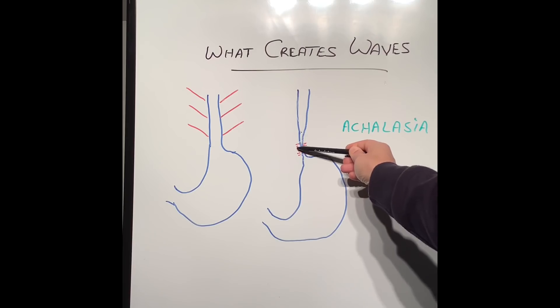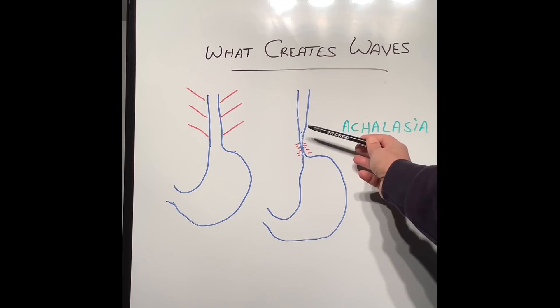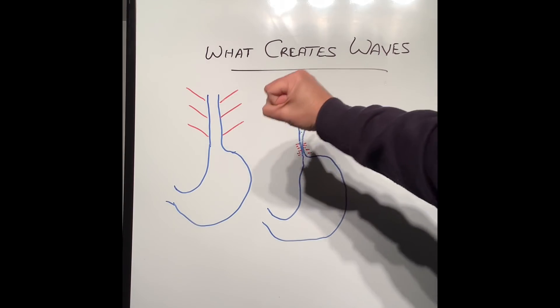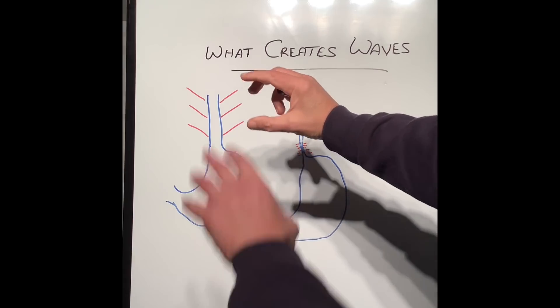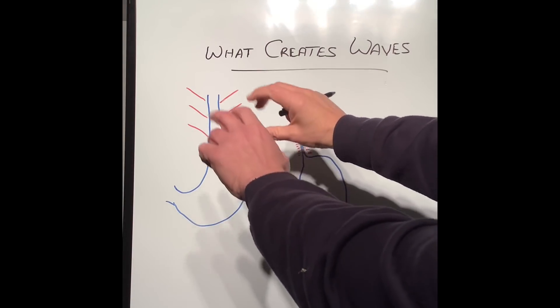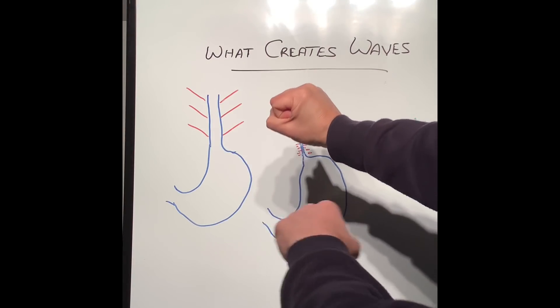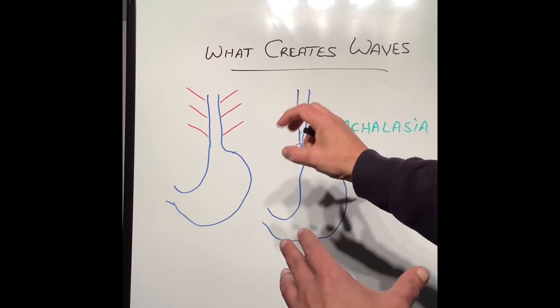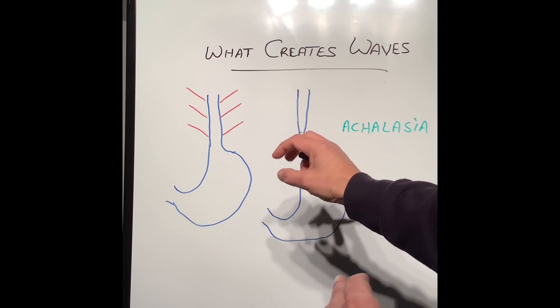But when it comes to this position where the nerve cells in the lower part of the esophagus are not functioning or not present, the esophagus does not open. It just stays shut like this, instead of opening like a wave. It just stays shut because there is no motor in the esophagus to make it open, and the food gets stuck.